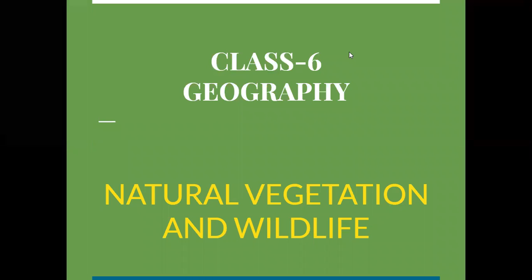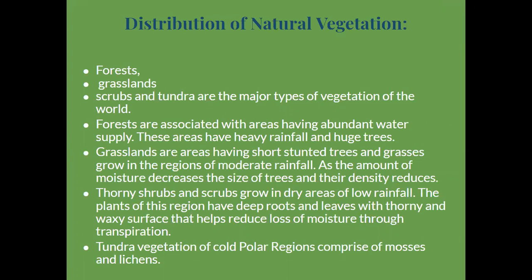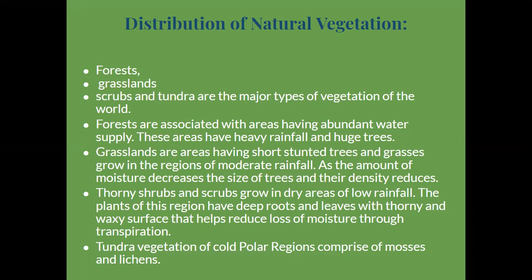Hello everyone. Let's have some fun learning about India's natural vegetation and wildlife. Flora, or plant cover, is the first form of life that appeared on earth. It was followed by fauna, or animals, and human beings. Natural vegetation is the plant cover in its original form without much interference by man, and is known as natural vegetation.